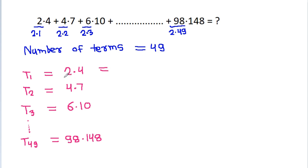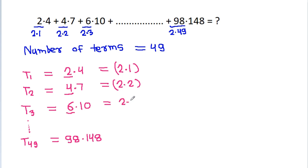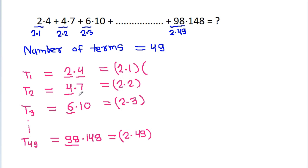Now, 2 is 2 times 1, 4 is 2 times 2, 6 is 2 times 3, and 98 is 2 times 49. We need to find the relation between 4, 7, 10, and 148.